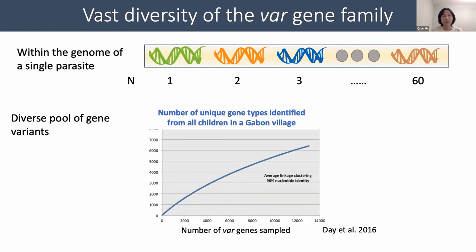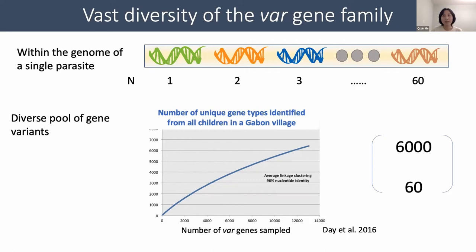At the population level, we observe a really diverse pool of gene variants. In very high endemic regions, there is an enormous pool of diversity, shown as a diversity accumulation curve built from sampling in Gabon, which reveals more than 6,000 different gene types as you sample. The curve is very far from saturation, meaning that if we sample random combinations of genes to form different strains, there is an astronomical number of possible combinations.